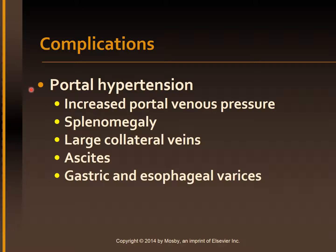Portal hypertension is a persistent increase in pressure within the portal vein greater than 5 mmHg. It results from increased resistance or obstruction of blood flow through the portal veins and its branches. The resistance to flow results in formation of collateral venous channels. Blood flow backs into the spleen causing splenomegaly. Veins in the esophagus, stomach, intestines, abdomen, and rectum become dilated, resulting in ascites, esophageal varices, prominent abdominal veins around the umbilicus — referred to as caput medusae — and hemorrhoids.